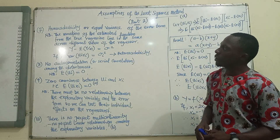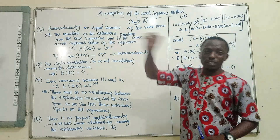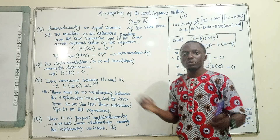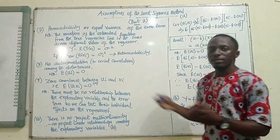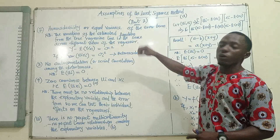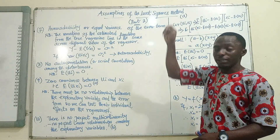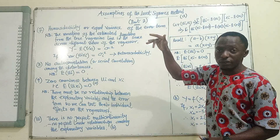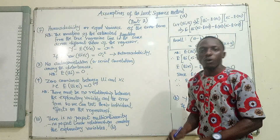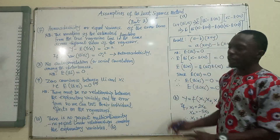The first one is homoscedasticity. Basically, 'homo' means equal and 'scedasticity' means variance. So when we are talking about homoscedasticity, it simply refers to equal variance of the error term. It applies to the error term, the Ui, the disturbance, the noise variable. There must be equal variance of the error term — that is one of the assumptions of the OLS.